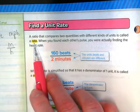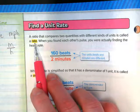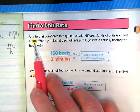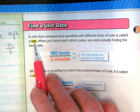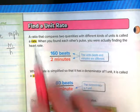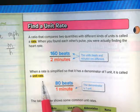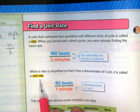Let's look at a little bit of vocabulary here. A ratio that compares two quantities with different kinds of units is called a rate. And when we want to know what it is over one, we call it a unit rate.